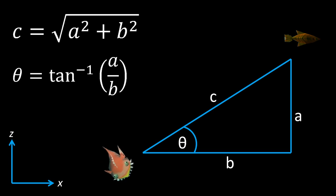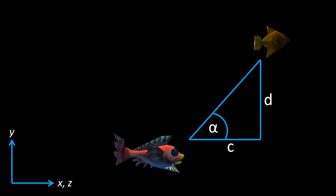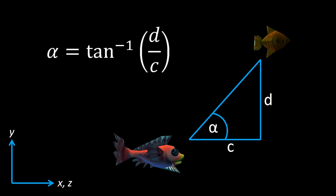Similarly, from a side view, we just have to calculate the angle alpha to adjust the fish's movement in the vertical direction. We do this using d — the difference in height between the two fish — and c, the horizontal distance we calculated in the previous step.